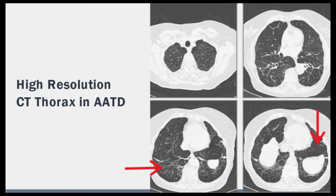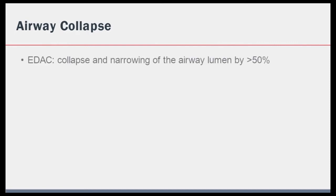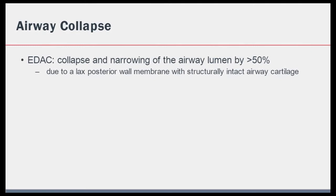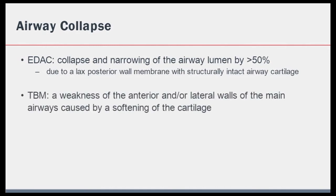Shifting our focus to other common differentials, what about causes of airway collapse? Excessive dynamic airway collapse is the pathological collapse and narrowing of airway lumen by more than 50%, entirely due to the laxity of the posterior wall membrane with structurally intact airway cartilage. This occurs in about a fifth of COPD and asthma patients but can occur as its own entity. Separately, tracheobronchomalacia is a weakness of the anterior and/or lateral walls of the main airways, caused by a softening of cartilage, and can be primary or can occur as a result of numerous lung diseases.